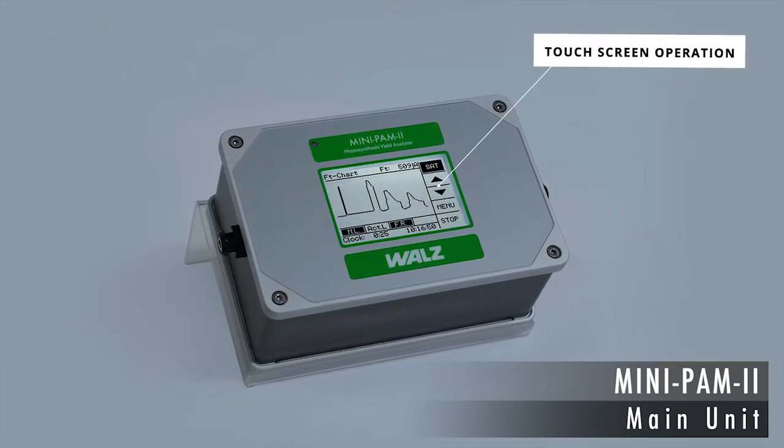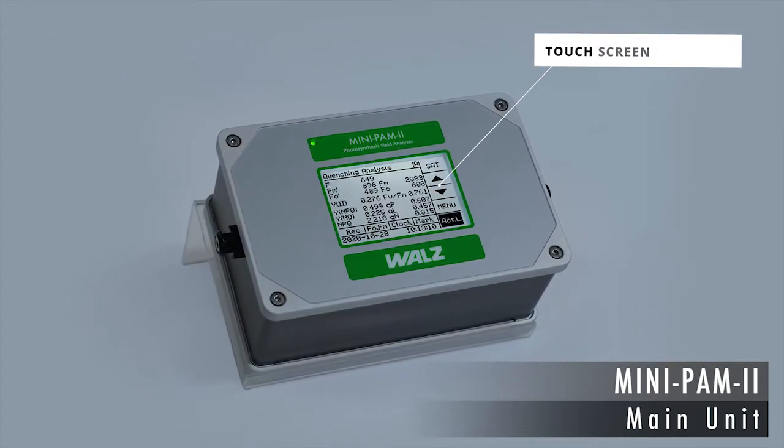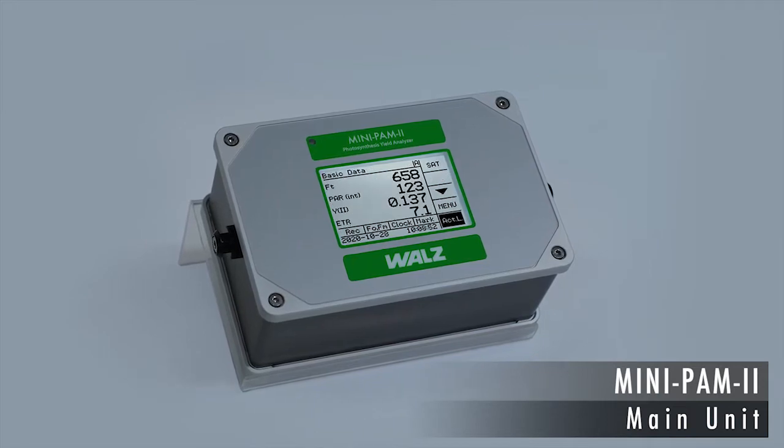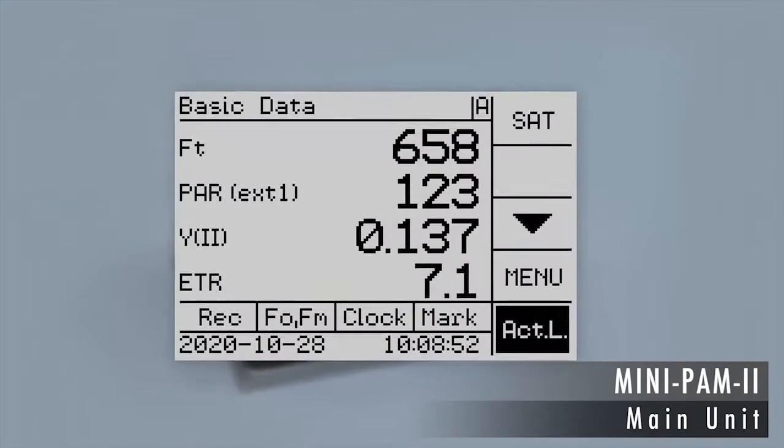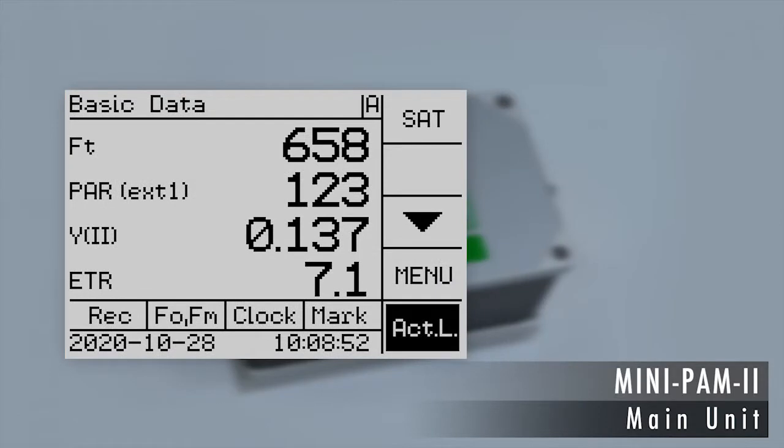Easy-to-use navigation keys provide quick access to the various functions of the device. You have the option of displaying only the key parameters: the fluorescence level, the photosynthetically active radiation abbreviated PAR, the efficiency of Photosystem II and the electron transport rate.